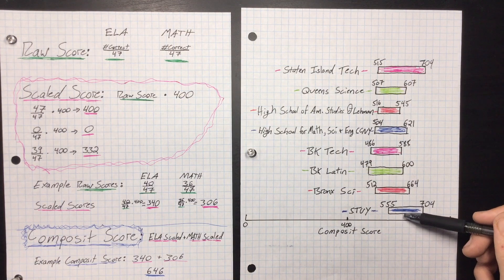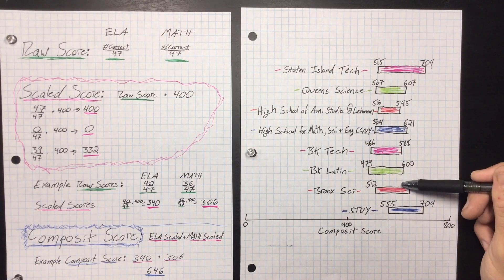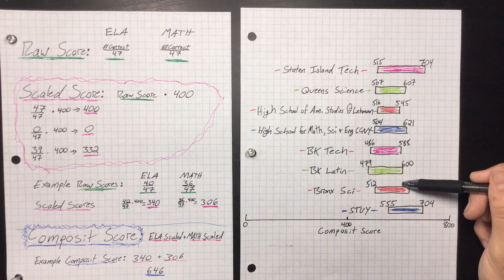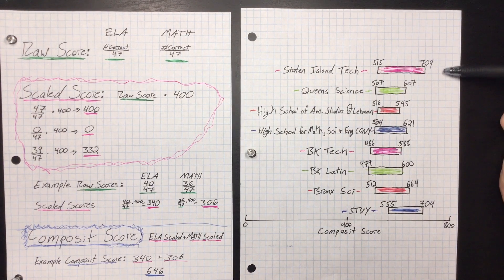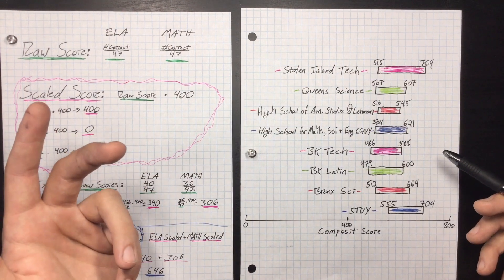So if you put STI first and you get a 555, you're going to go to STI, right? But if you put STI second and you get a - let's say you put Bronx Science first and you get a 600, they're going to send you to Bronx Science first. So here's something that you can study to see what your goals might be.